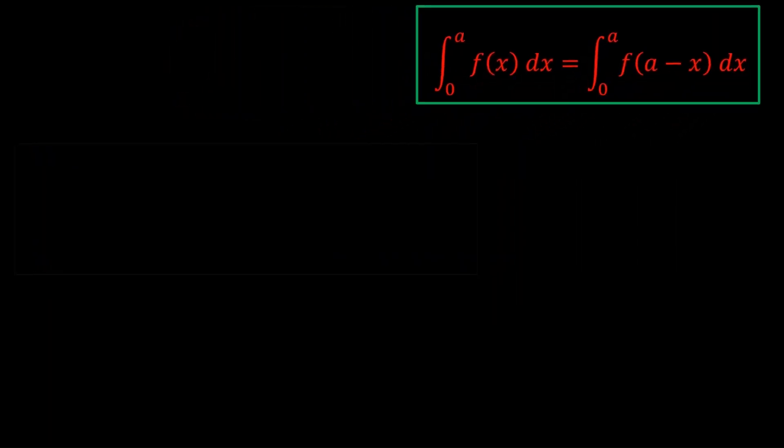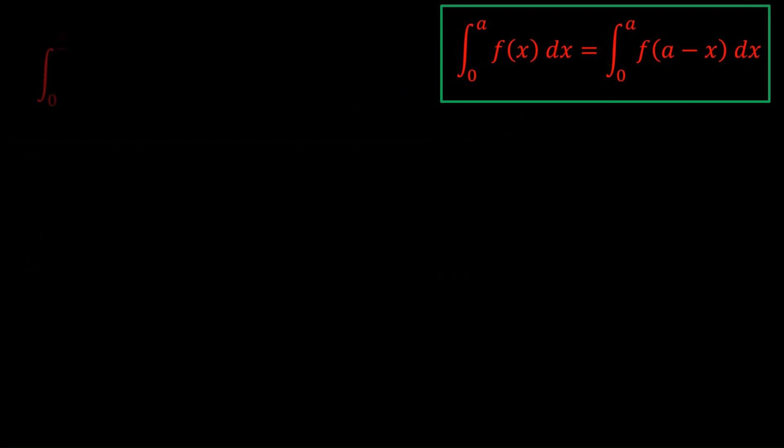Okay, let's do a quick example. So when the bounds are zero to something, you might want to try King's Rule. So we replace x with π/2 - x in the function.